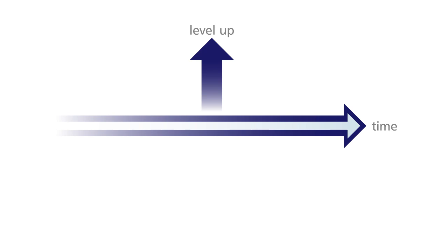This is where modulation comes in. Modulation is the process we use to change the sound over time for each note that we play. There are several tools we use for this but they mostly have a similar purpose: to increase a level or to decrease a level, and this change will often be applied over time. In other words, the modulator will twist a knob to change the sound in a consistent manner for each separate note.